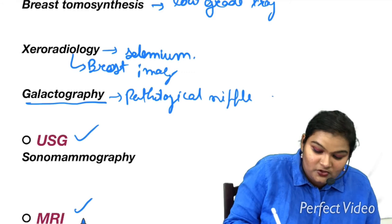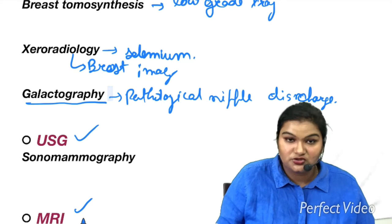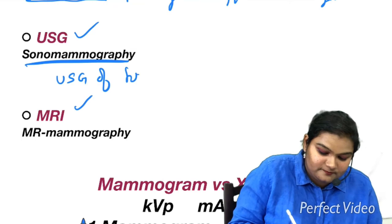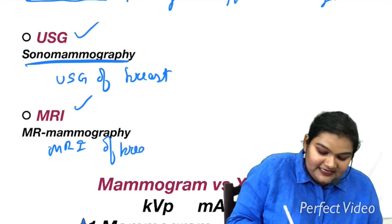In case of pathological nipple discharge, you are going to search for the reason of discharge. So you are going to visualize the whole duct system in the breast. That is sonomammography. You can say that it is a USG of breast. Whereas MRI of breast, we call it as MR mammography.